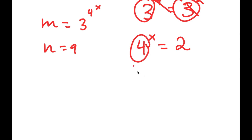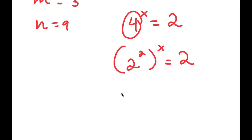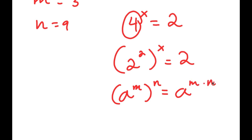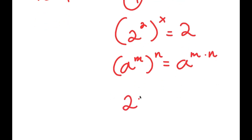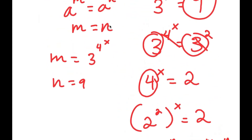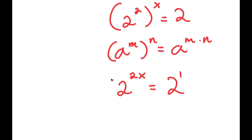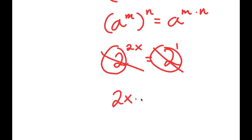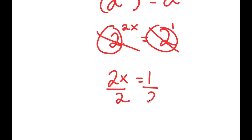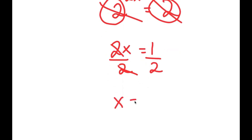Now, 4 is the same as 2 squared, so I get 2 squared to the power of x equals 2. Using the power of a power rule, this becomes 2 to the power of 2x equals 2. Since 2 equals 2 to the power of 1, applying the equal-base property gives 2x equals 1. Dividing both sides by 2, I get x equals 1 half.